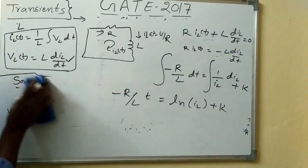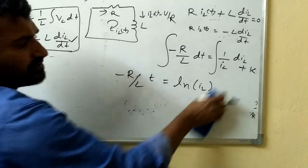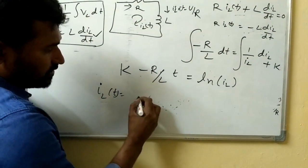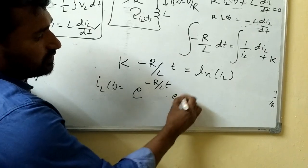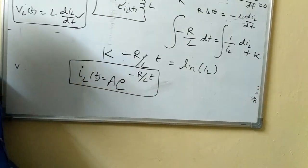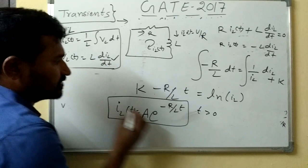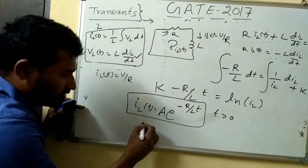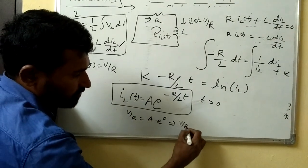Rearranging, we get I_L(t) = e^(−R/L·t) · e^K. We let e^K = A (a constant), so I_L(t) = A·e^(−R/L·t). To find A, we apply the initial condition: at t = 0, I_L(0⁺) = V/R. Substituting t = 0, e^0 = 1, so A = V/R. The final expression for t > 0 is therefore I_L(t) = (V/R)·e^(−R/L·t).